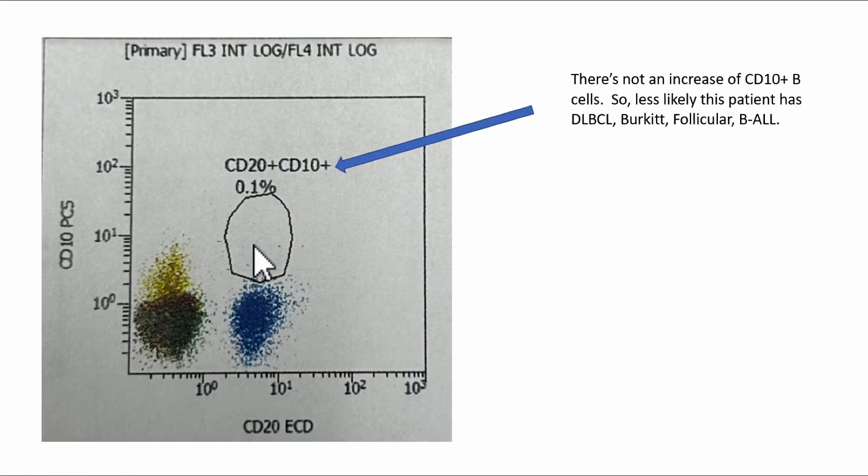Now, that being said, let's look at this practice case where there are CD20 populations. So these are the B lymphocytes, and then this is CD10, and hardly any of them are CD10 positive. So I'm less concerned for those B cell neoplasms, DLBCL, Burkitt, follicular, BALL.